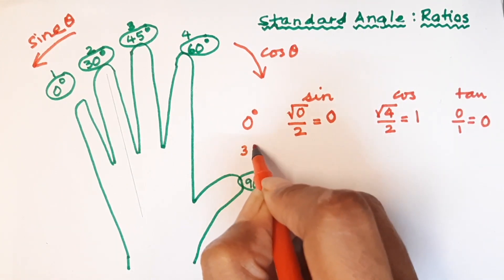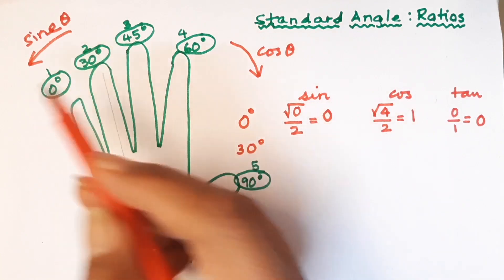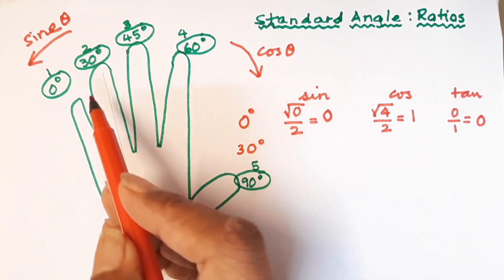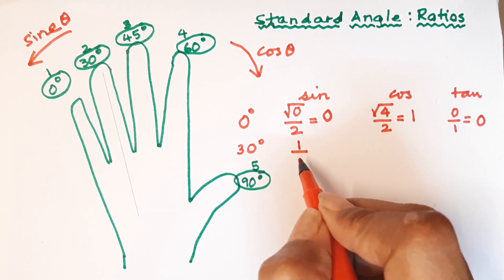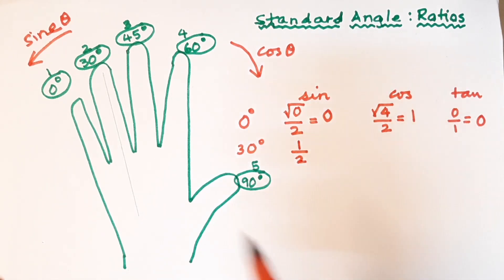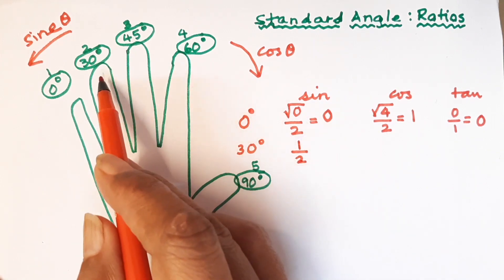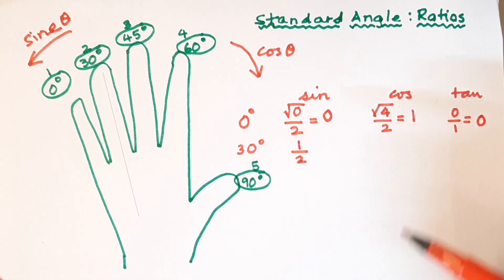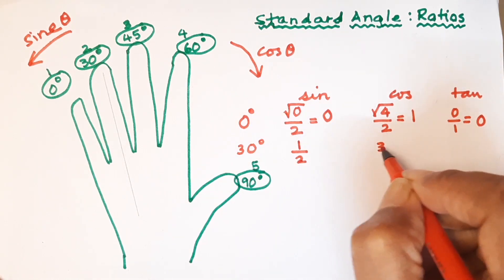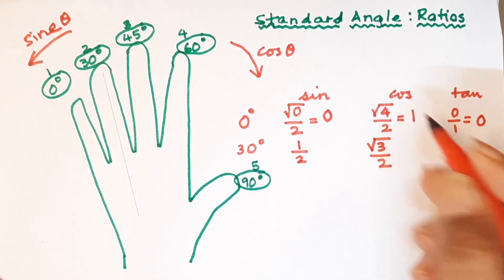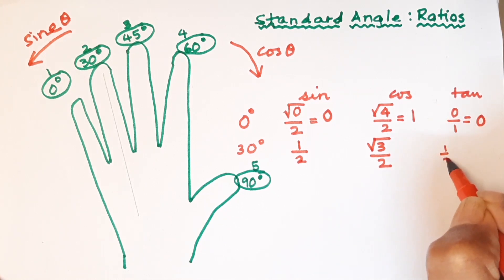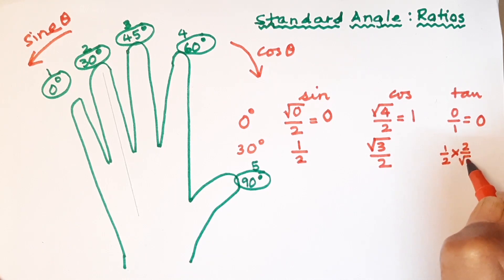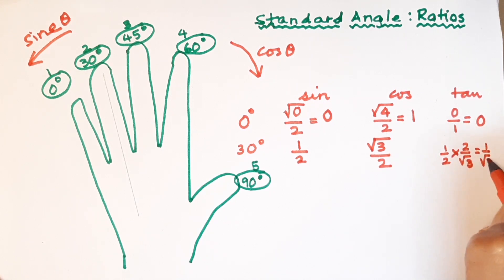Now we come to 30 degrees. For sine of 30°, we look at the fingers on the left — there is one finger, so we take root of one, which is one, divided by two, giving us one-half. For cos of 30°, on the right there are three fingers, so we get root three divided by two. For tan of 30°, sine upon cos gives us one-half divided by root three over two, the twos cancel, giving one upon root three.